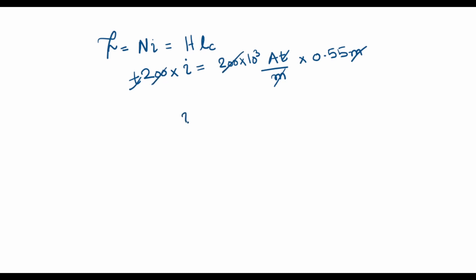And from here the current that I need to establish a flux of 0.012 Webers comes out to be 550 amperes. So this is the solution of the first part of the problem.